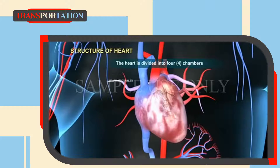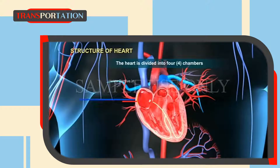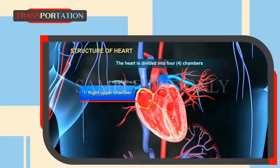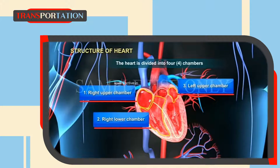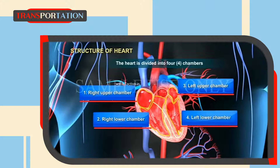The heart is divided into four chambers: first, the right upper chamber; second, the right lower chamber; third, the left upper chamber; and fourth, the left lower chamber.